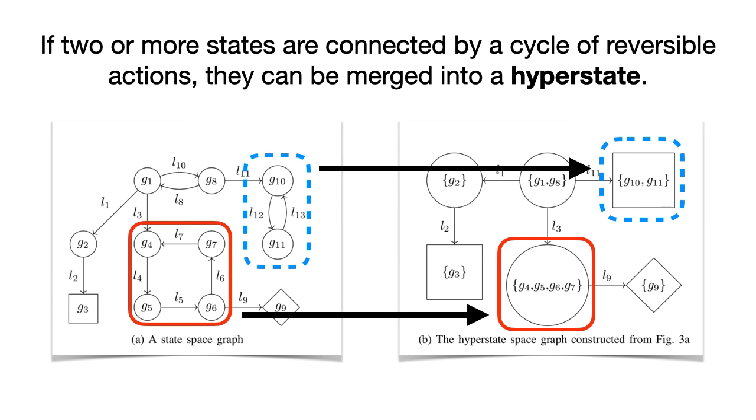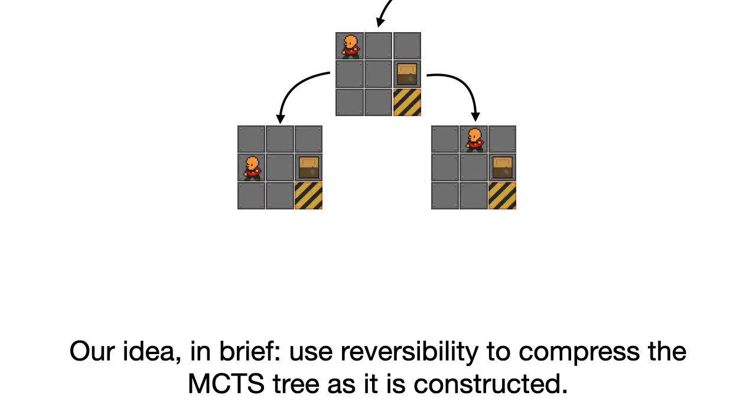So that's how reversibility works. And basically, the entire of my talk is contained in the next slide. So our idea, essentially, is to take this idea of reversibility, take this idea of compression, and apply it to the MCTS tree while it is being constructed.